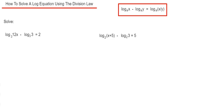So let's look at example one. We've got log base 3 of 12x minus log base 3 of 3 equals 2. If we combine these two logs together by using our division law, then we get log base 3 of 12x divided by 3 equals 2.